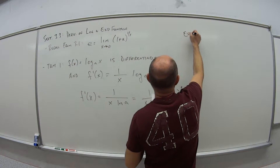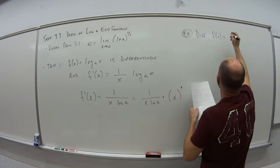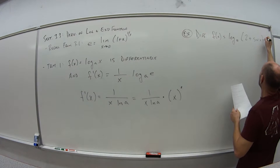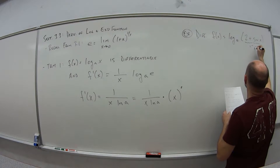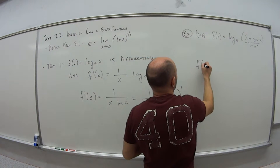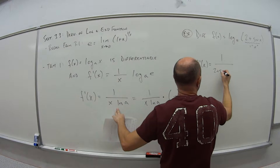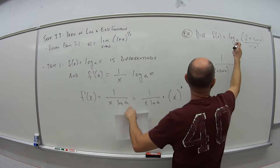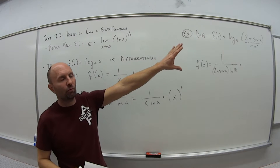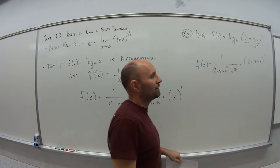Let's look at an example. We want to differentiate f of x equals log base 10 of 2 plus sine of x. Here, 2 plus sine of x is our x piece in the formula. So f prime of x, using the formula, is 1 over that x piece — 2 plus sine of x — times the natural log of whatever the base was, natural log of 10. Then we multiply by the derivative of what was in the parentheses, so times the derivative of 2 plus sine of x.